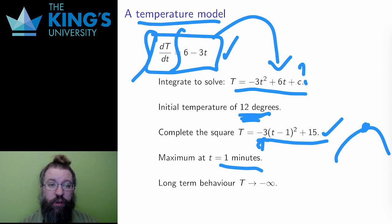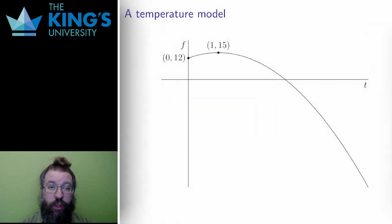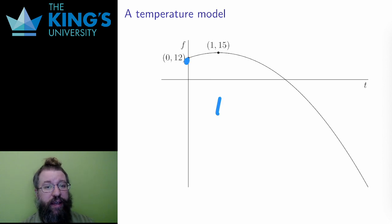The long-term behavior is to go to negative infinity, again, since this is a downward quadratic. Here is the graph. It starts at 12 degrees, grows briefly to 15 degrees, and then decays.